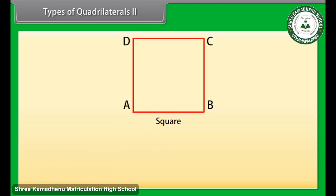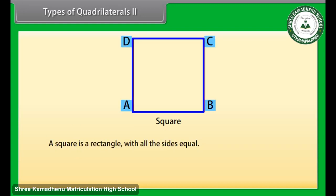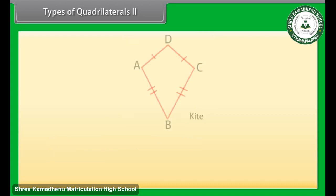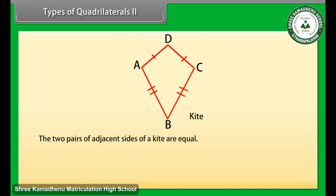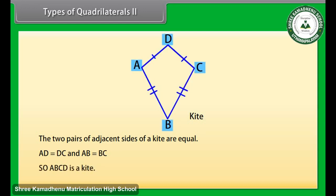Look at this figure now — this is a square. A square is a rectangle with all sides equal. ABCD is a square. The last one is kite. The two pairs of adjacent sides of a kite are equal. Here AD is equal to DC and AB is equal to BC. So ABCD is a kite.